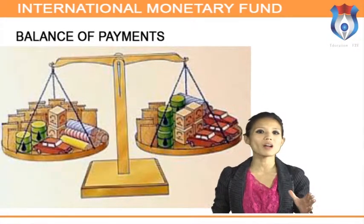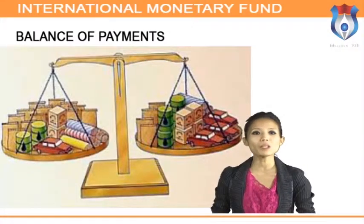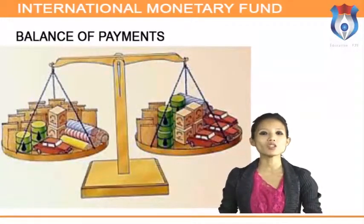Balance of payments accounting revolves around one key insight: it's all about the supply and demand for dollars. Foreigners demand dollars to buy goods from the United States, while US nationals supply dollars as they buy foreign currency to purchase goods, services, and investments from abroad. In the end, the supply of dollars must equal the demand for dollars — and that is what balance of payments accounting records.